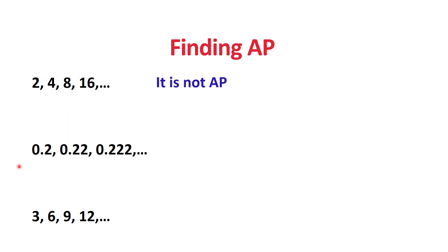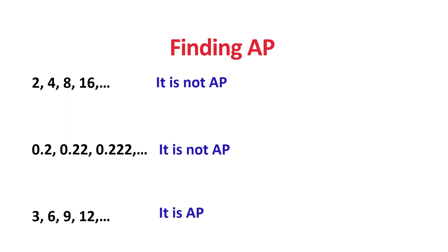The second series also does not have a constant common difference, so it is not an Arithmetic Progression. Now the next series is 3, 6, 9, 12. The difference between 3 and 6 is the same as between 6 and 9, and the same as between 9 and 12. The common difference is 3 throughout. Hence, this series is in Arithmetic Progression.